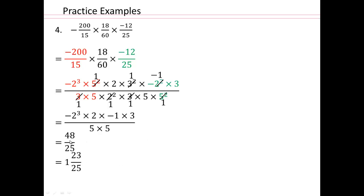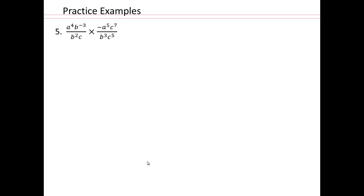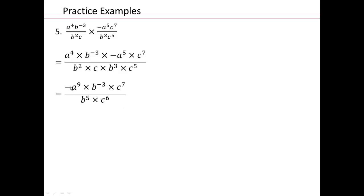You can also write the fraction as a mixed fraction. Now we have variable terms, but it's still the same process — multiply everything out, then divide out or combine like terms. We have a to the fourth and negative a to the fifth, giving negative a to the ninth; b to the negative third; c to the seventh. Then b squared and b to the third give b to the fifth; c and c to the fifth give c to the sixth. b to the negative third is the same as b to the third in the denominator, so you have b to the eighth in the denominator, a to the ninth, and c to the seventh over c to the sixth leaves one c in the numerator.